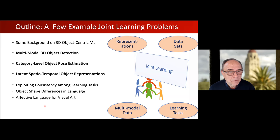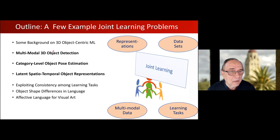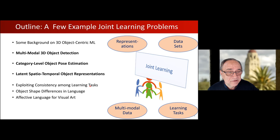Here's an outline of the talk. I'll start with some brief background on object-centric 3D machine learning. The bulk of the talk will be on machine learning on point cloud data in 3D, covering multi-modal 3D object detection, category-level pose estimation, and latent spatio-temporal object representations. Then very quickly I'll go over other directions in my group that relate to joint learning: consistency among learning tasks, learning object shape differences in language, and affective — emotional — language for visual art.